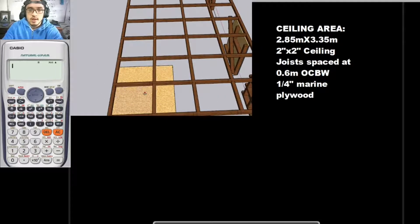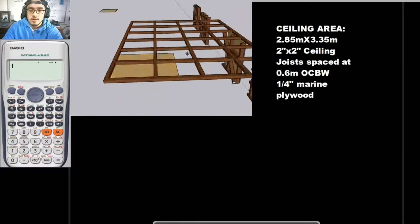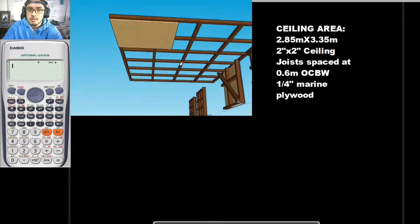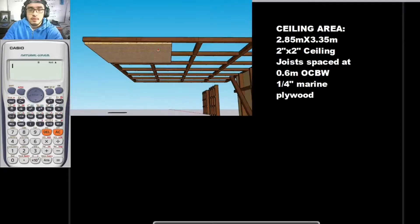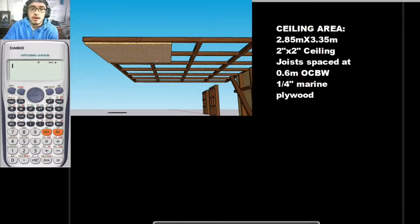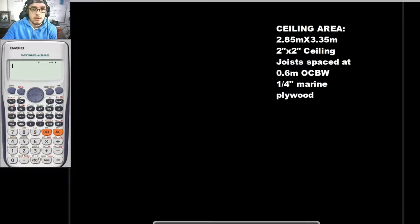The spacing center to center is 600 millimeters. You can see here that this plywood is actually fastened to the joists. What we would be doing is get the total area of the ceiling and multiply it by our factors — for the plywood and for the lumber itself, the 2×2 for our ceiling. Let's solve for the area first.